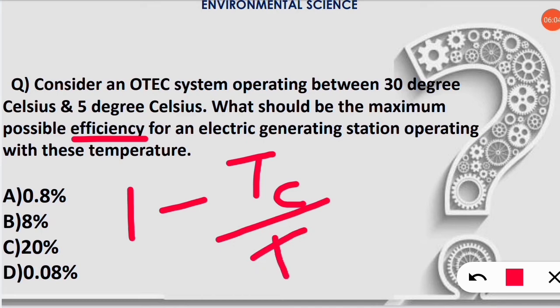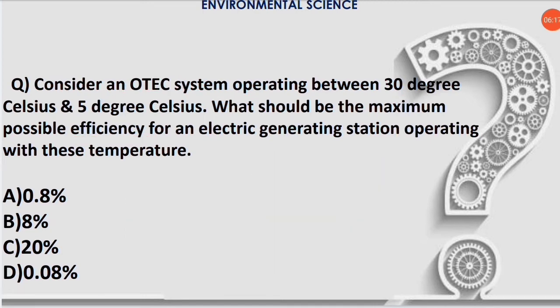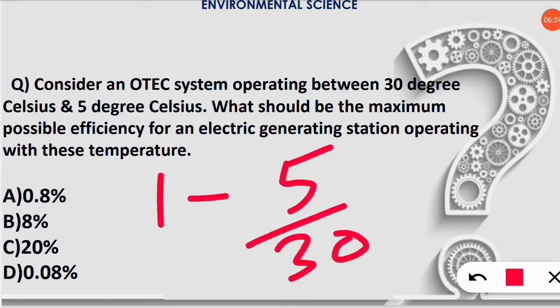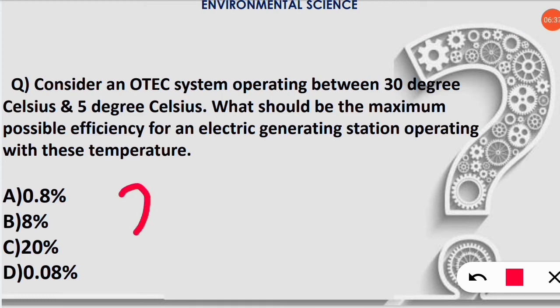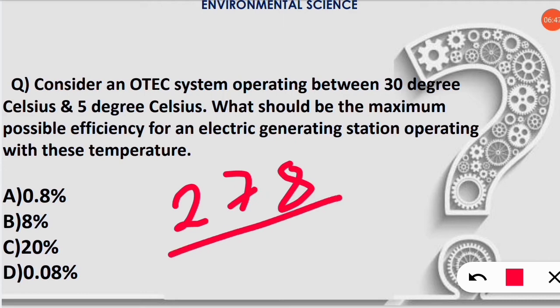T_c is 5°C and T_h is 30°C. After solving 1 - 5/30, this would be completely wrong because first we have to convert this into Kelvin. To convert to Kelvin, we add 273. So T_c becomes 278K and T_h becomes 303K.